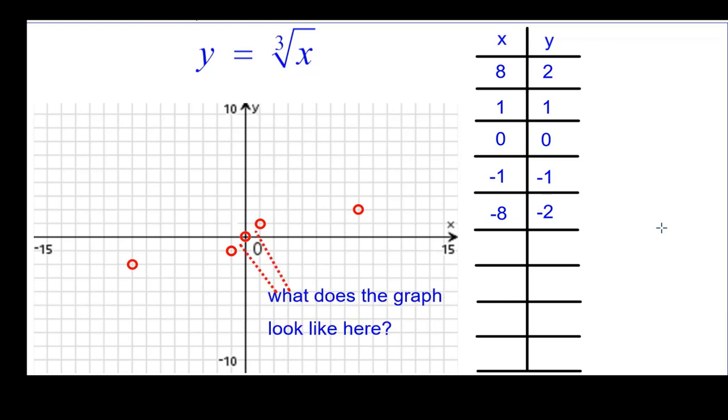But right here, what does the graph look like? Is that a straight line there? So to investigate that, we're going to use two other numbers: 1/8 and negative 1/8 to see what's going on there. And you've probably figured out why I picked those numbers. Those are perfect cube fractions.